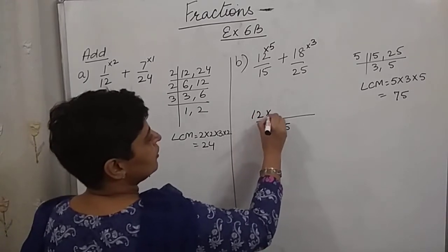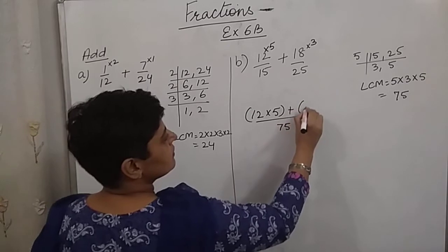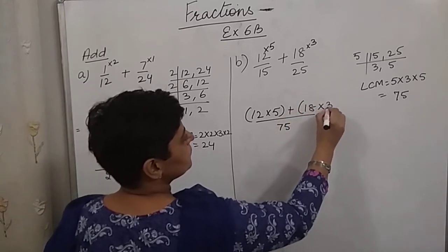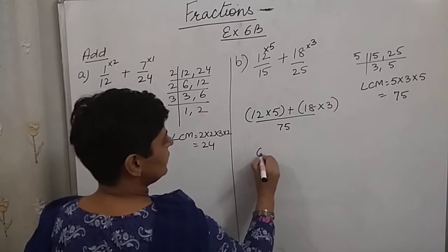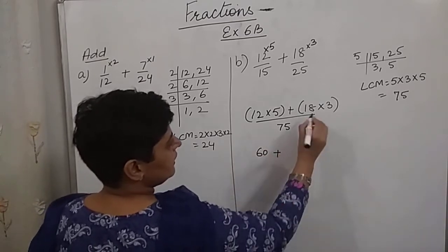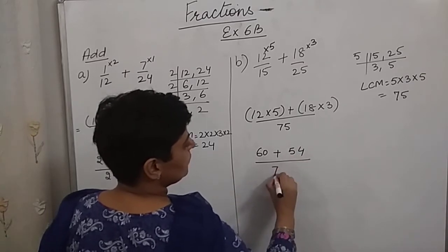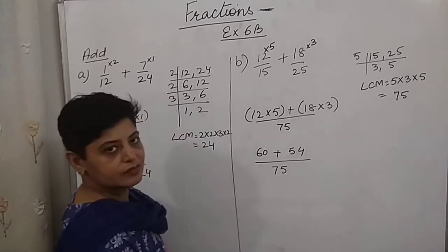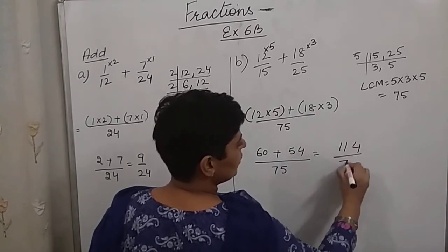So 12 multiplied by 5, sign of plus in between, 18 into 3. So we get 60 here. 12 into 5 is 60. 18 into 3 is 54 upon 75. And this is 114 upon 75.